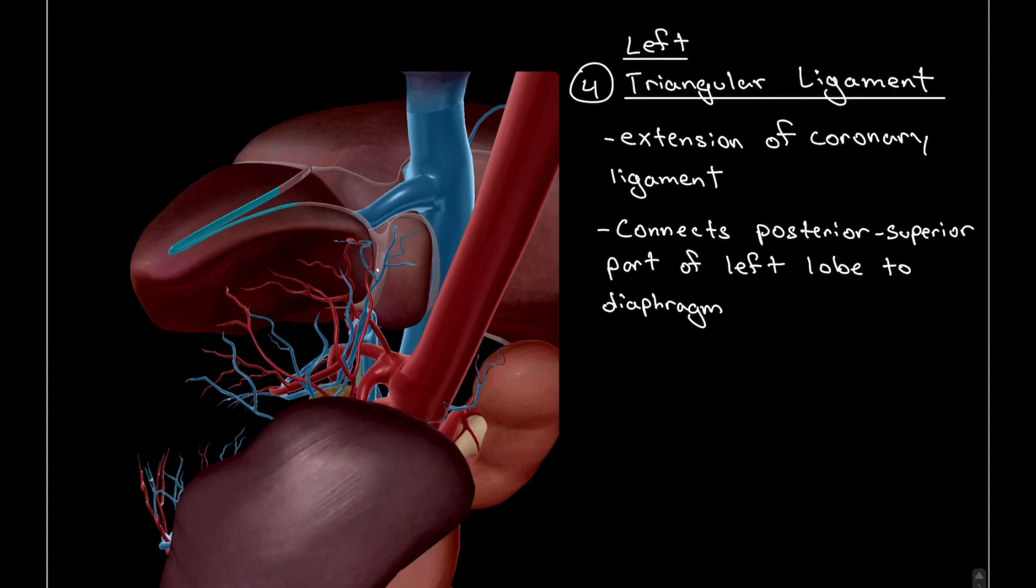Moving on, one of two triangular ligaments we can see here is the left triangular ligament. It continues the coronary ligament and gives fibers going superiorly, anchoring the liver to the diaphragm.